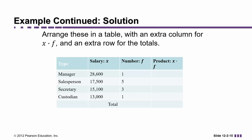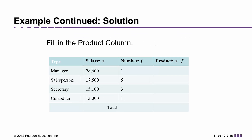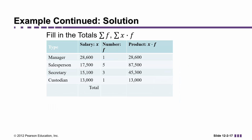If you recall, in order to find the mean of a set of data, we need to add up all the data values. We're not just adding up 17,500 once, but five times. In other words, we're going to multiply 17,500 by five. So, multiplying each of the data values by their frequencies, we have 28,600 times one, 17,500 times five, 15,100 times three, and 13,000 times one. We're going to add all of these up, and we also need to know how many data values we have — add up all the frequencies.